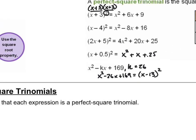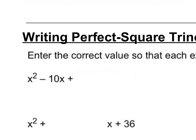Let's write these as perfect square trinomials. If we had x squared minus 10x plus what would make this a perfect square, that would be 25. I know this because I take negative 10, think about what two numbers that are the same would add to negative 10 — that's negative five — and if I square that I get 25. So in factored form this would be x minus five quantity squared.